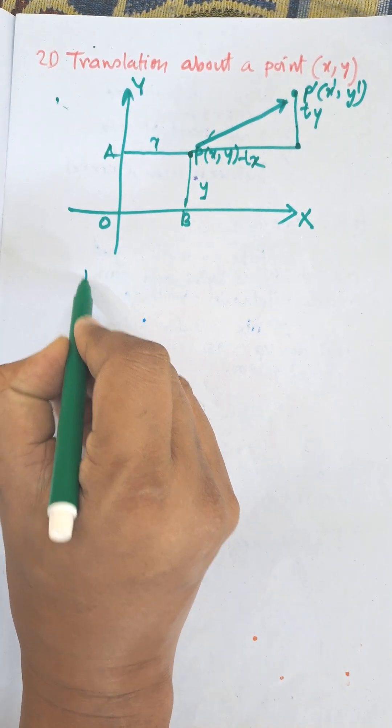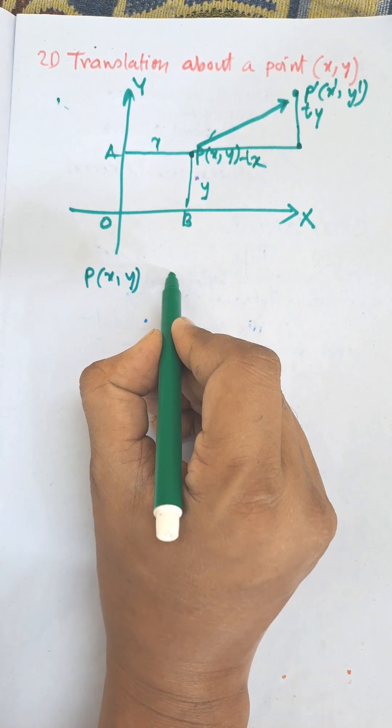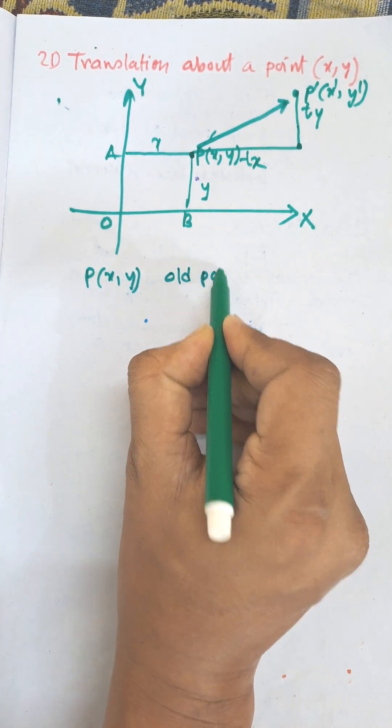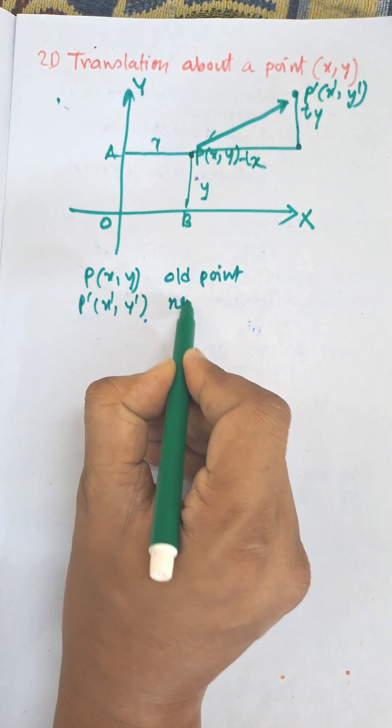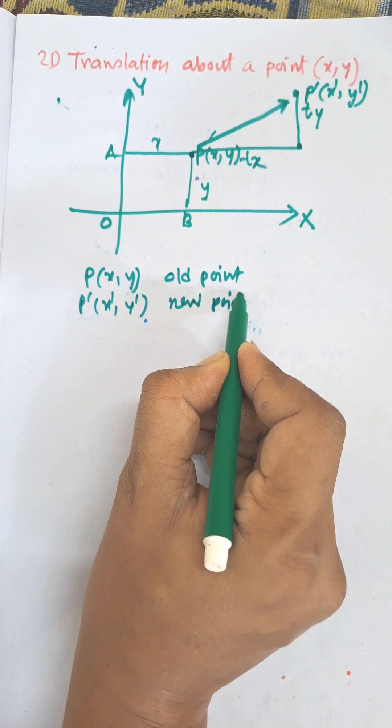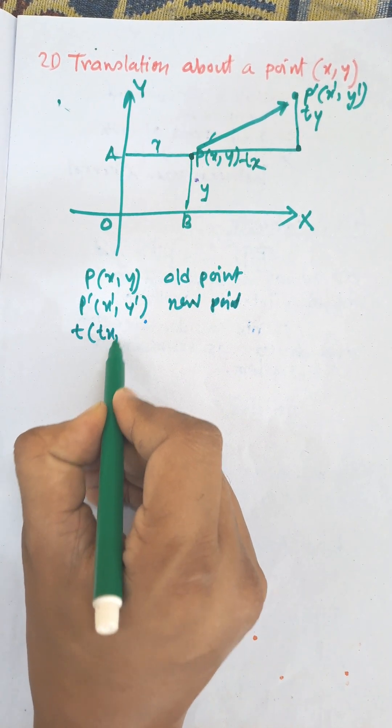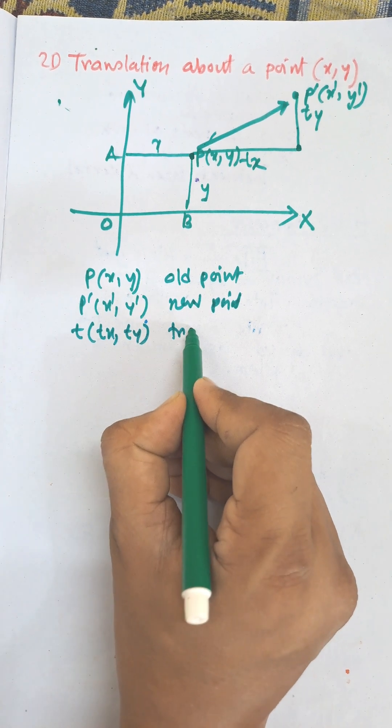Here P(x,y) is the old point, P'(x',y') is the new point, and t(tx,ty) is the translation vector.